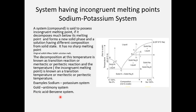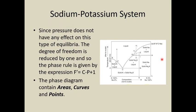Now, the phase diagram of the sodium-potassium system. Since pressure does not have any significant effect on solid-liquid equilibria, the degree of freedom is represented by the reduced phase rule expression: F' = C − P + 1. A phase diagram contains areas, curves, and points, which we will consider in turn.